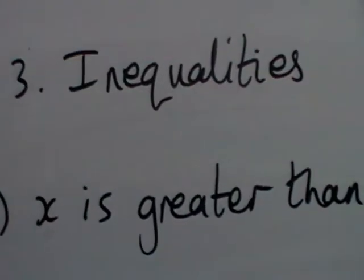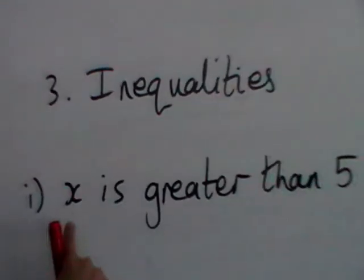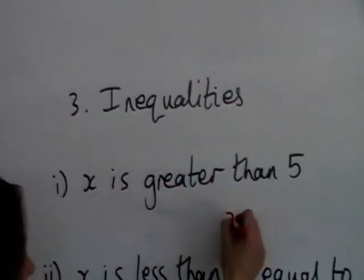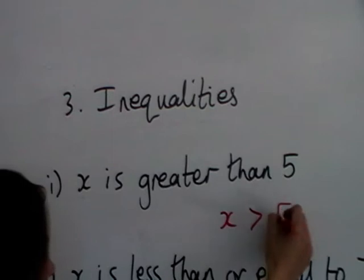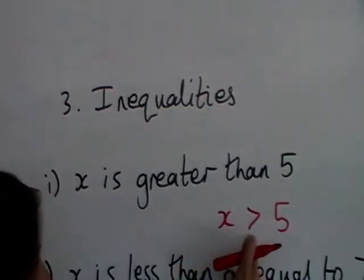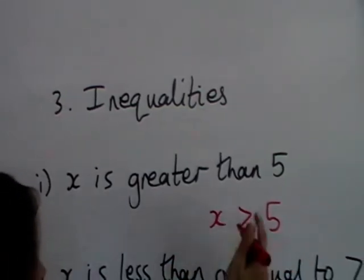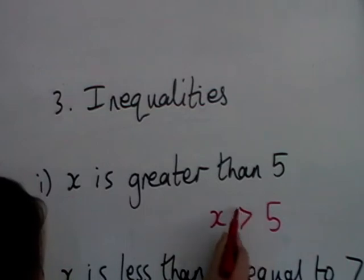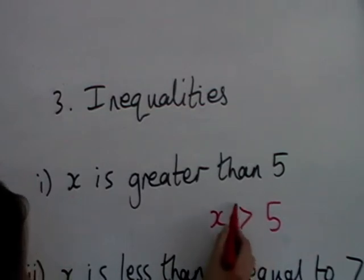Okay, so the first few questions are just using the inequality signs. So x is greater than 5 is simply written like that, x is greater than 5. It's greater than because on this side the sign is wider, it is bigger.